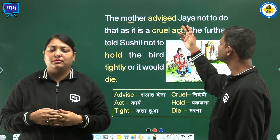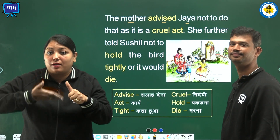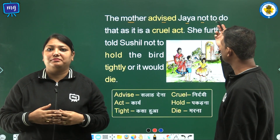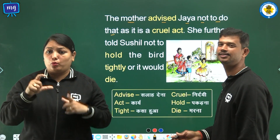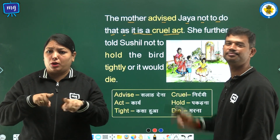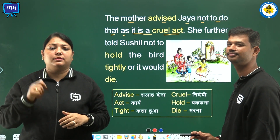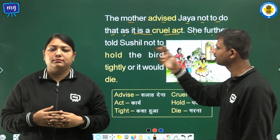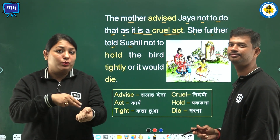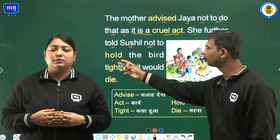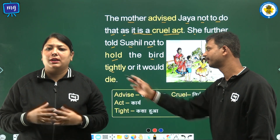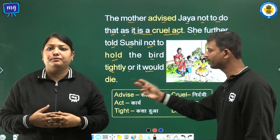The mother advised Jaya not to do that as it is a cruel act. She further told Sushil not to hold the bird tightly or it would die.